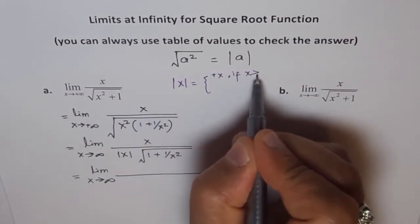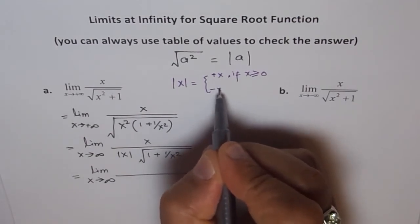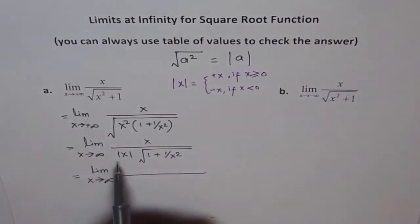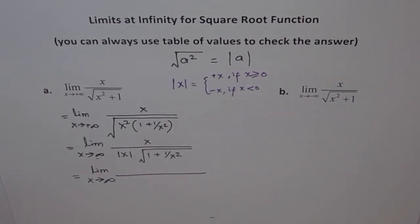And this negative x if x is less than 0. Since we are going to positive infinity this will be positive x. That's what I'm trying to say. So this is positive x over x square root of 1 plus 1 over x square.